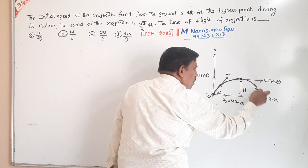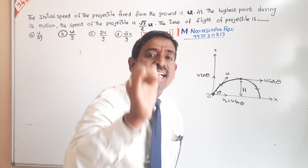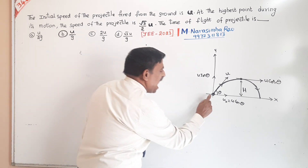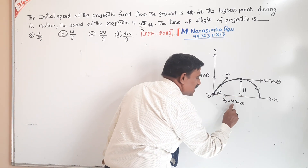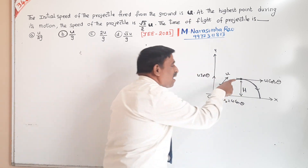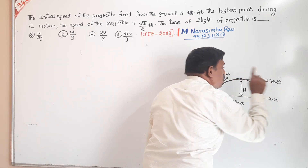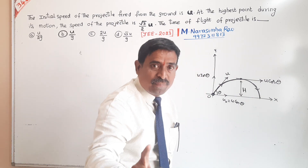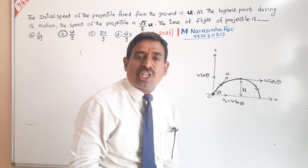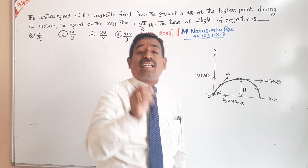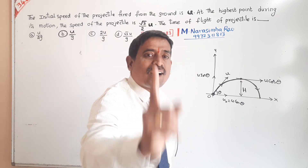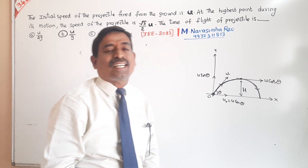Throughout the journey of the projectile, the horizontal velocity component remains constant. At the starting point, horizontal velocity is U cos theta, and at the highest point it is also U cos theta. When the projectile is moving upward, the vertical component of velocity changes, but the horizontal component remains constant.